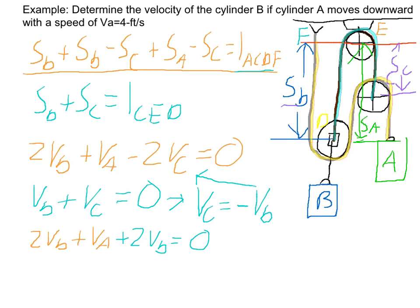So V sub C equals negative V sub B. Substituting: two V sub B plus V sub A plus two V sub B equals zero, and V sub A equals four feet per second down. When you solve this out, V sub B equals one foot per second up, because you end up with a negative number for V sub B, which is in the opposite direction of V sub A.